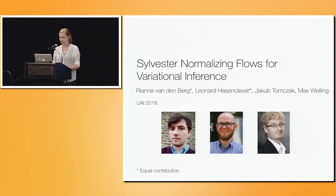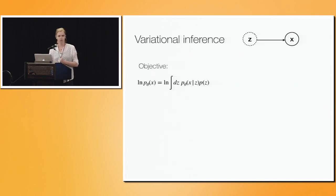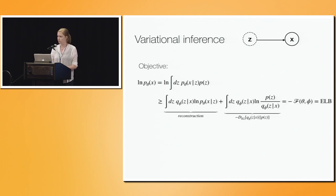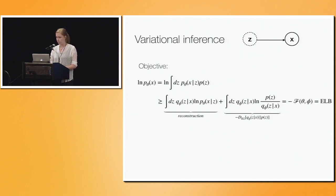I'm going to talk about Sylvester normalizing flows for variational inference. I want to start with one quick slide on variational inference for autoencoders. We're going to assume a joint model for latent unobserved variable Z and observed variables X, and we'd like our model to maximize the marginal log likelihood. Since marginalizing out Z is intractable, we introduce the evidence lower bound by introducing an approximate posterior Q with parameters phi, which breaks up into a reconstruction term and a regularizing term between the approximate posterior and the prior.